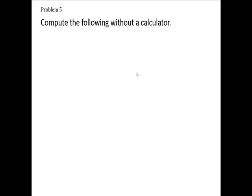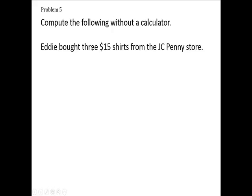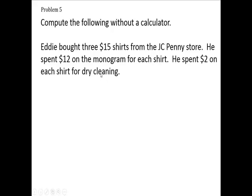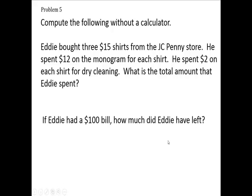Compute the following without a calculator. Eddie bought three $15 shirts from JCPenney. He spent $12 on each shirt for the monogram and $2 to dry clean each of the three shirts. What's the total amount that he spent? And if he had a $100 bill, how much did he have left over or how much change did Eddie get?